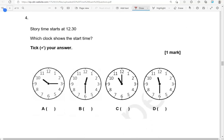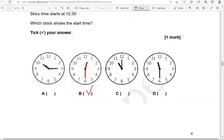Story time starts at 12.30. Which clock shows the start time? Tick your answer. Option A shows quarter past 10. Option B shows 12.30. So, that's the correct one. Option C shows 11 o'clock, which is not the case. And option D shows half past 11 or 11.30. So, the only correct option is option B.